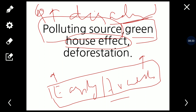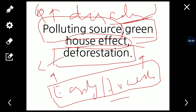Burning firewood releases harmful gases causing air pollution and contributes to the greenhouse effect. Greenhouse gases like carbon dioxide, methane, and carbon monoxide increase the temperature of the atmosphere, leading to global warming. Additionally, the use of firewood leads to deforestation, which is another major disadvantage. In the next topic we will cover coal and petroleum. Thank you very much.